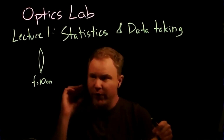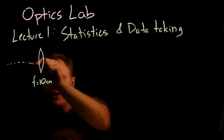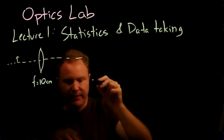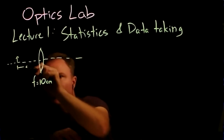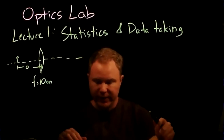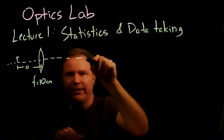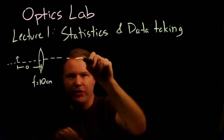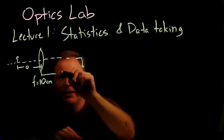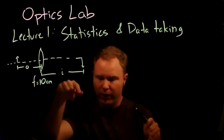But when you have light that's not coming from infinitely far away — say you have light coming from some object along an optical axis at some distance O away, the object distance — it ends up getting focused at a different distance, a distance I away. The image is actually upside down, and the distance from the center of the lens out to where the image comes into focus is called I.